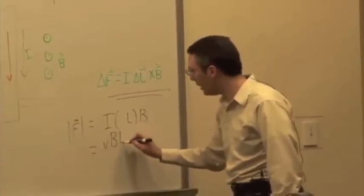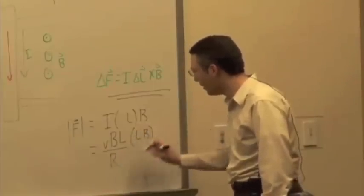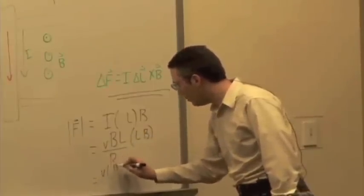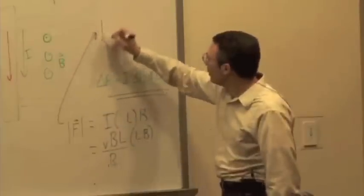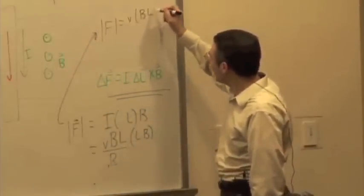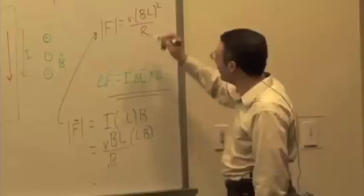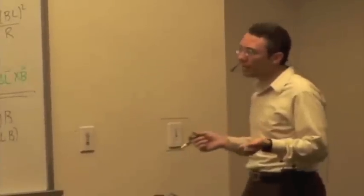I have V times B times L over R times another L times B. So this is V, B L, that's right up here. The force is going to be V, V times L squared over R. So that's the force.